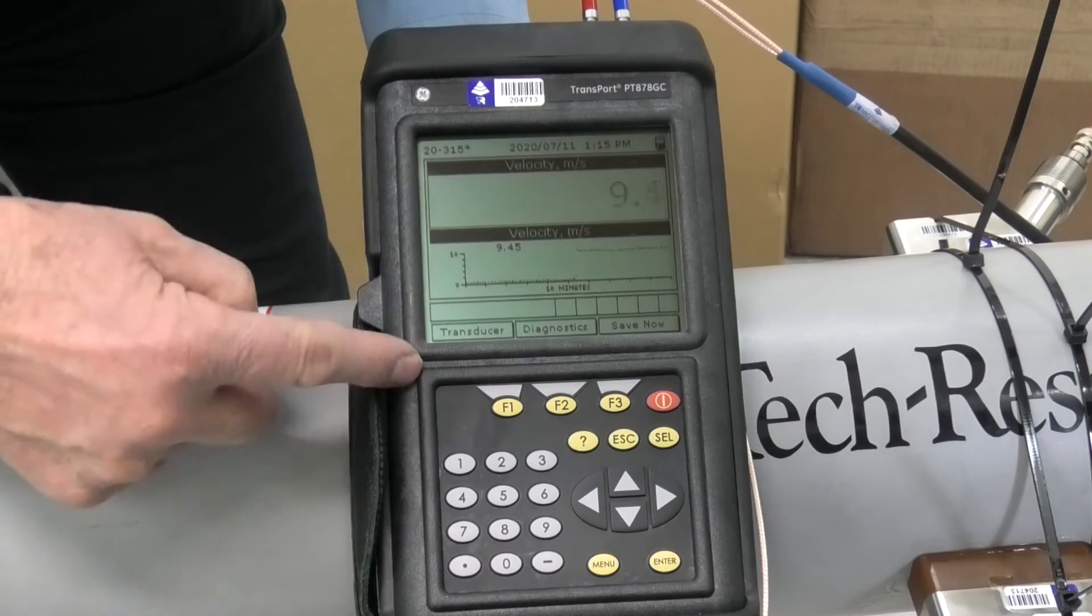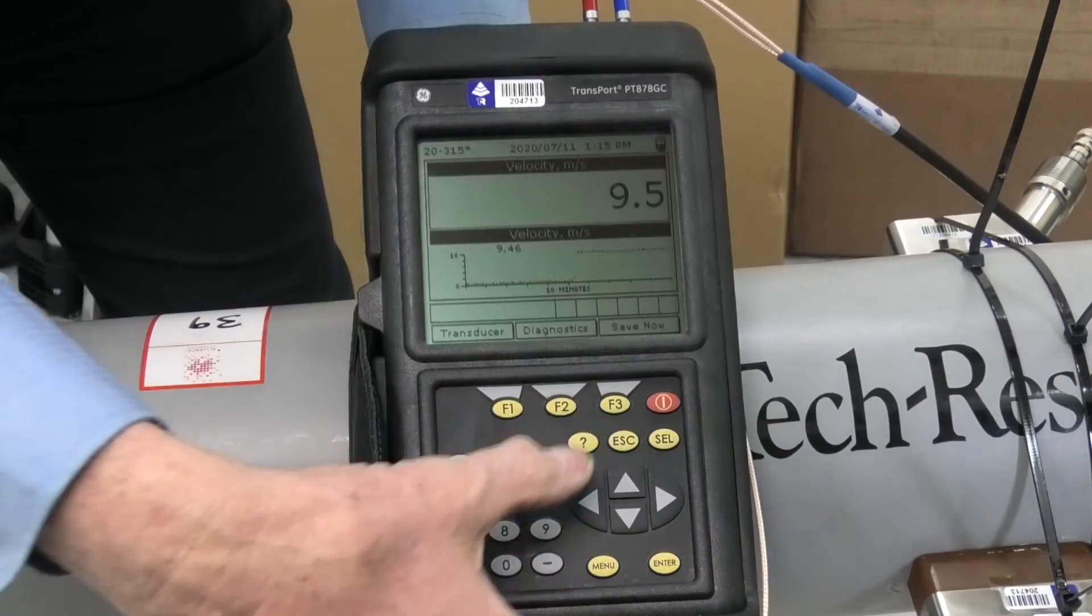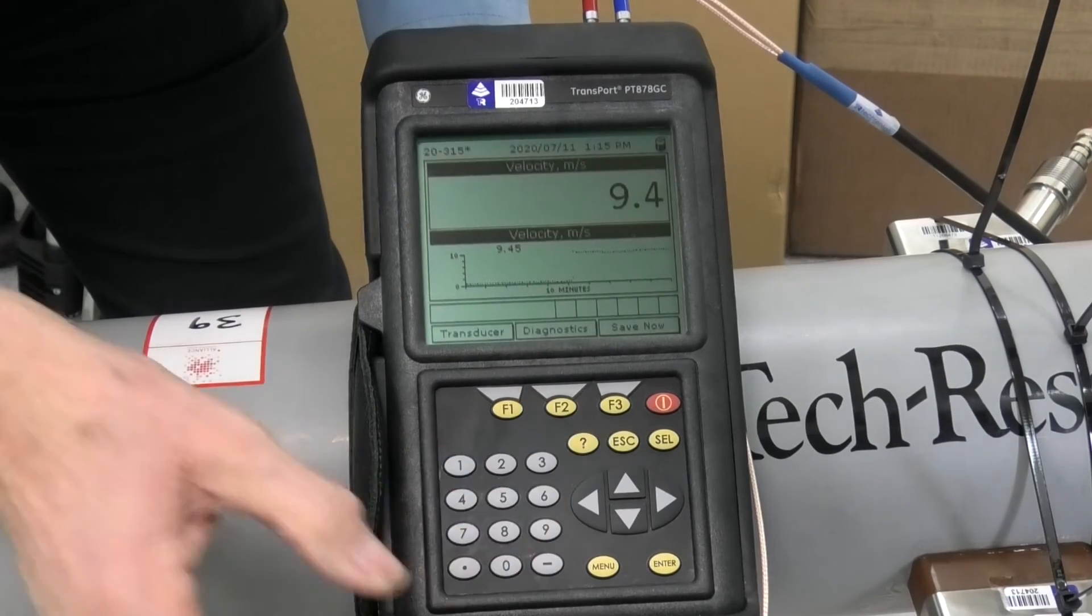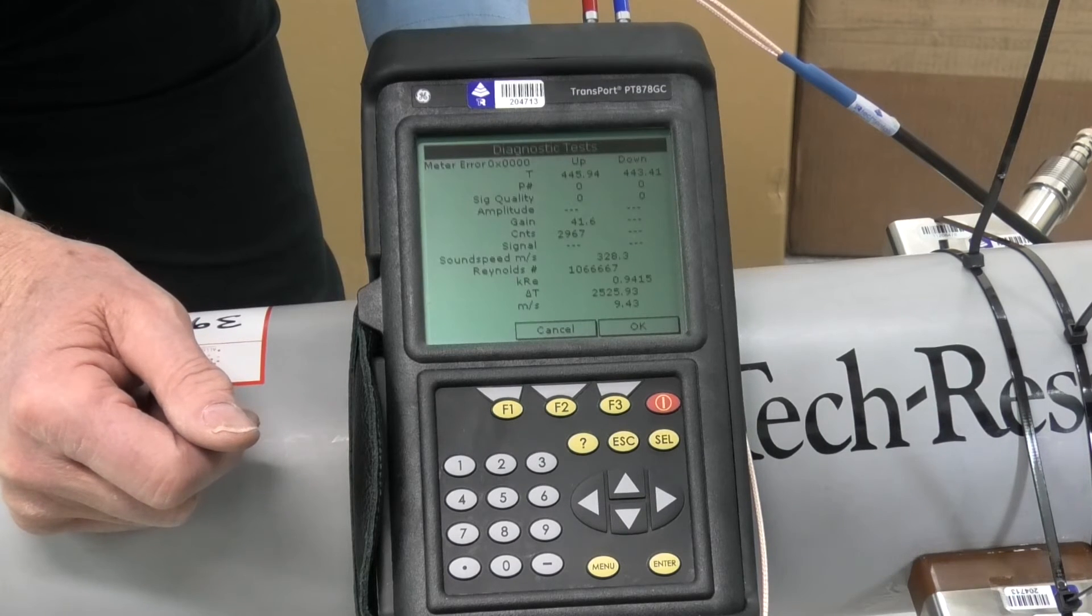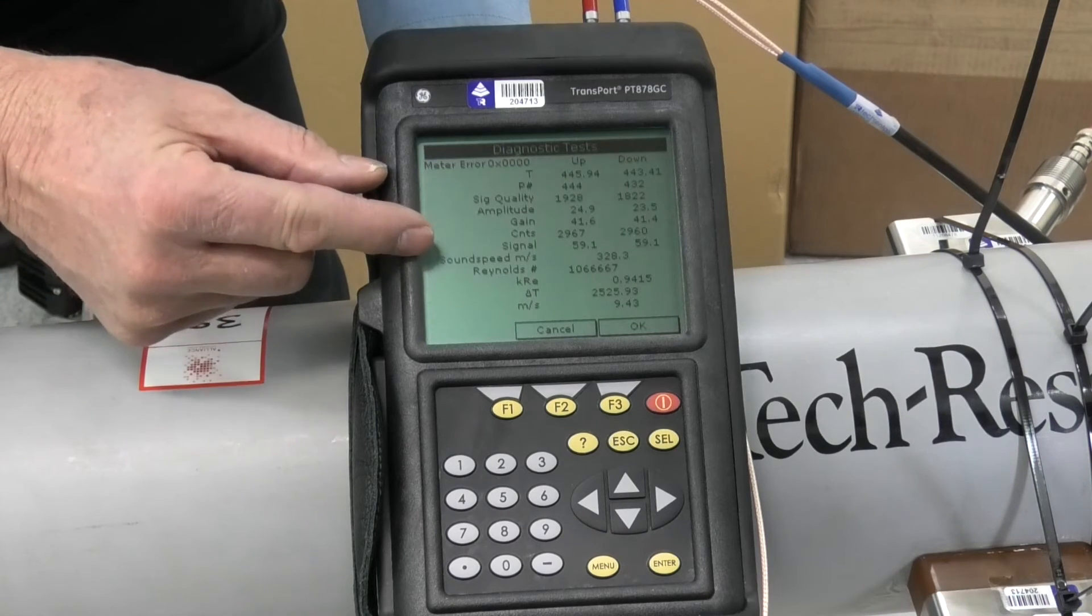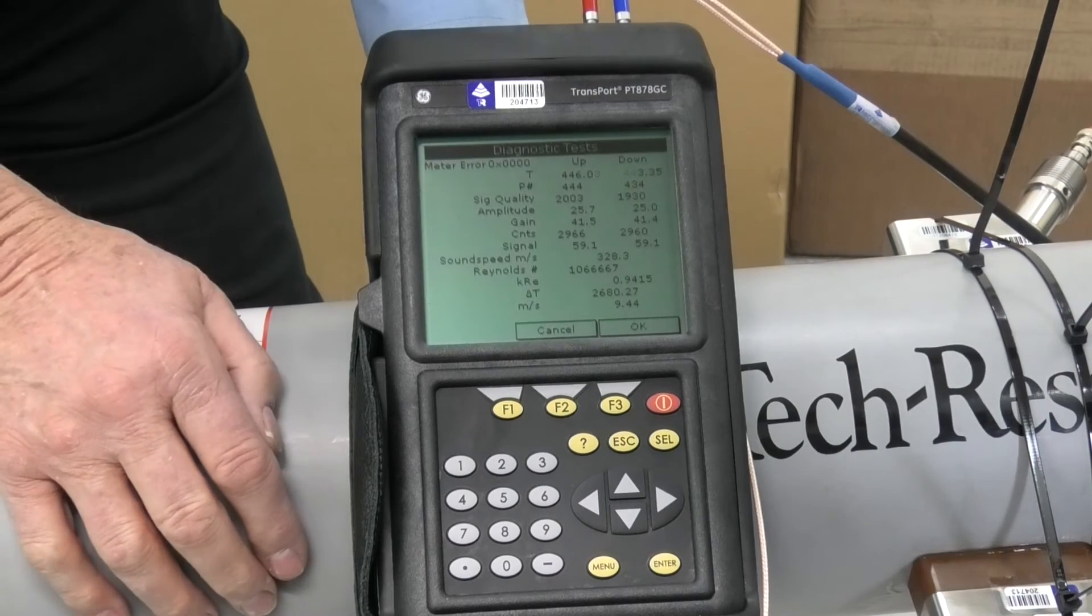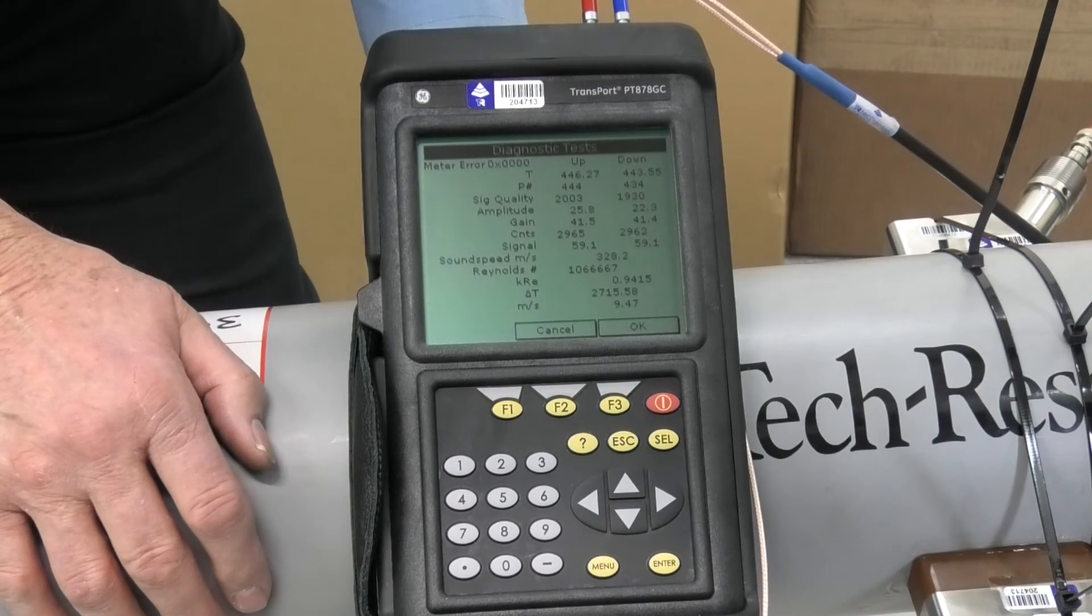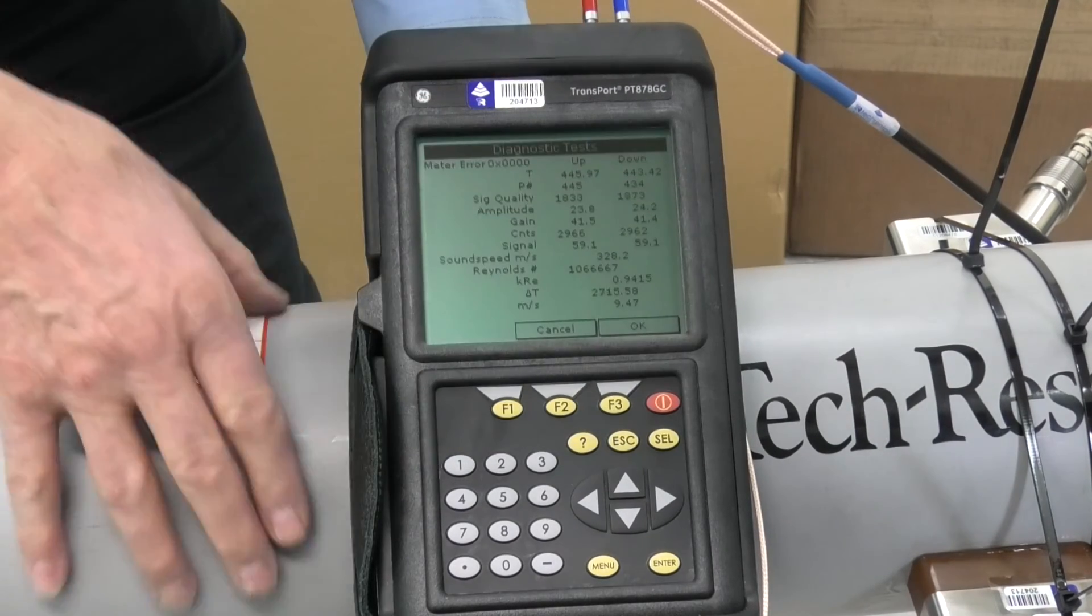Now, one of the things you've got to do when you're using this on compressed air to check whether or not your dampening material here is working, is you've got to hit this diagnostic button here. And we wait, and this brings up the diagnostics. Now, one of the things it brings up is the sound speed. And you've got to make sure the sound speed here is about correct. Now that's 328, measuring 328 metres per second. Sound speed for air, 340 or so, that's close enough.